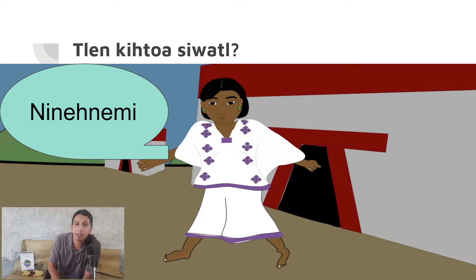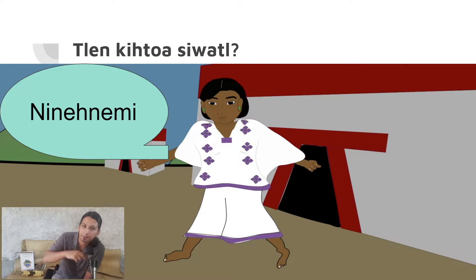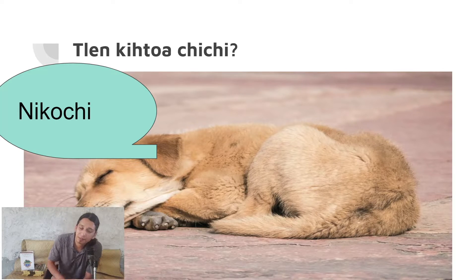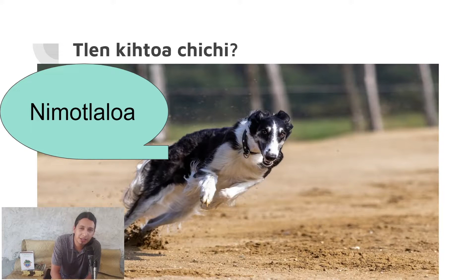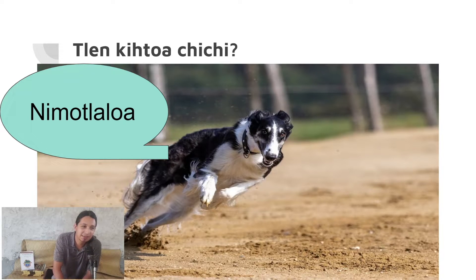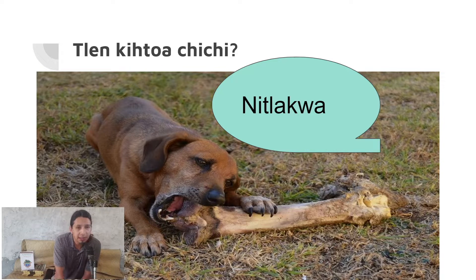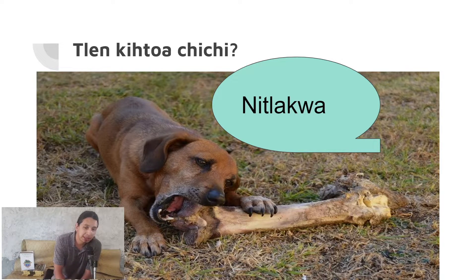Tlen kihtoa siwatl — 'ni nehnemi,' I walk. Tlen kihtoa chichi — what does the dog say? He says 'ni kochi,' I sleep, or 'ni motlaloa,' I'm running, or 'ni tlakwa,' I eat. Sure, dogs don't speak, but for the purpose of this exercise we practice with them.